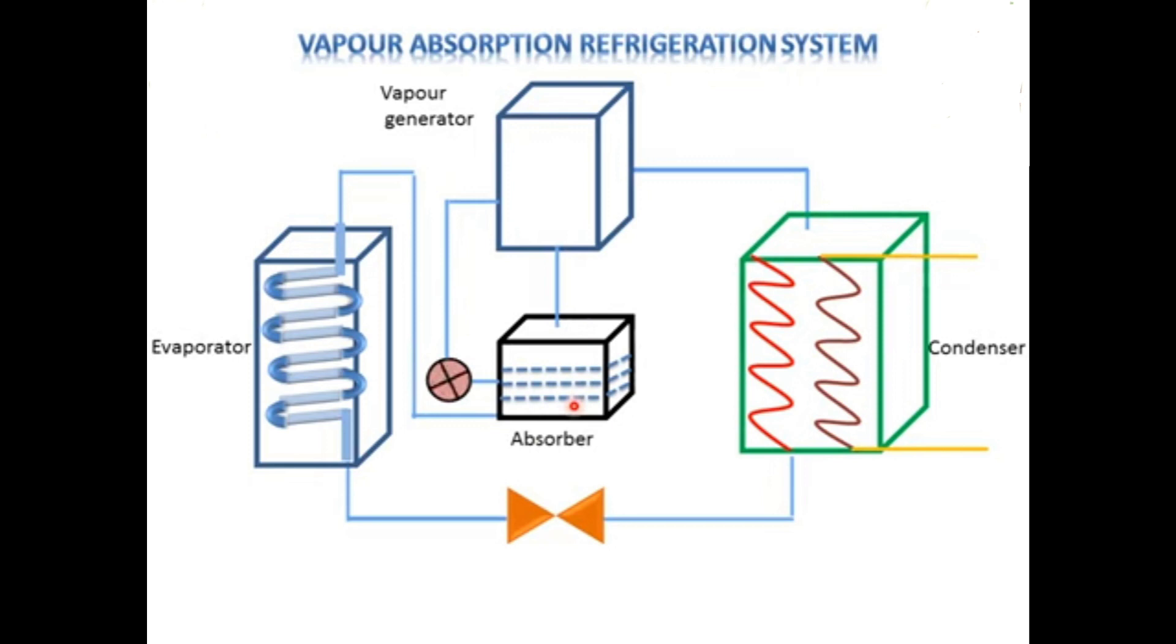In pump, the pressure of refrigerant is increased. Now this high pressure refrigerant is sent to the Vapour Generator. Here in Vapour Generator, it is converted into Dry Vapour and the remaining weak solution is again sent to the absorber.